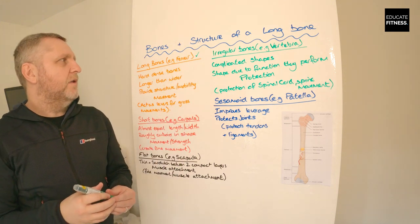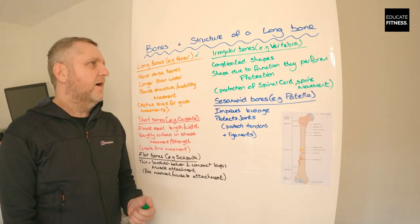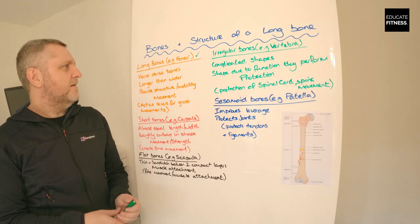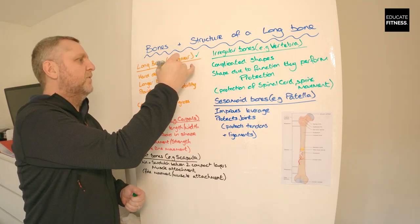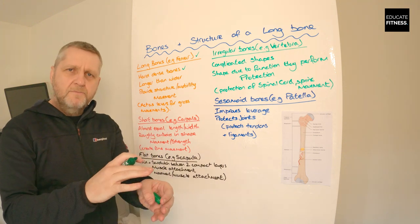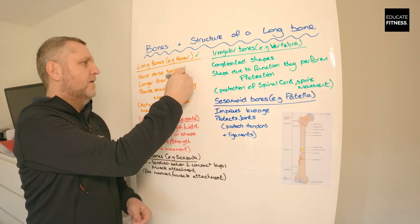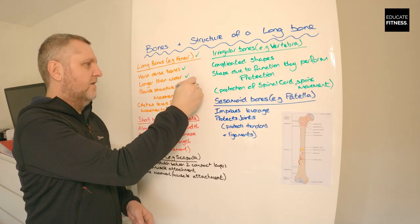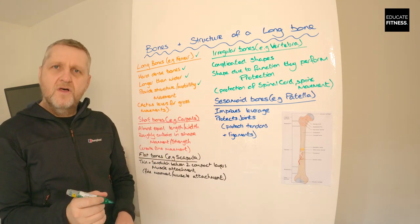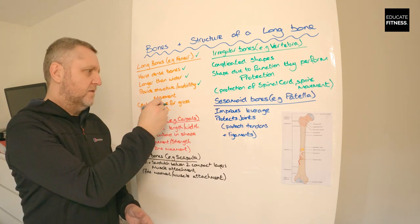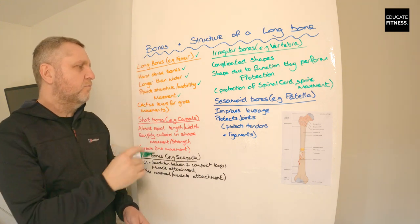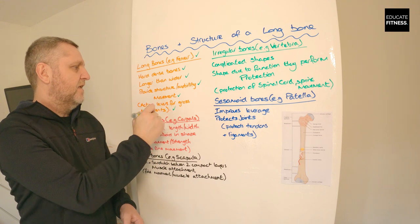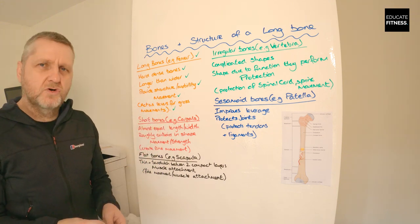A good example of a long bone is the femur. We've also got the humerus, the ulna, and the radius. These are hard and dense bones — they are longer than they are wide and the basic function is to provide structure and mobility. Long bones are for movement; they act as levers for gross movement.